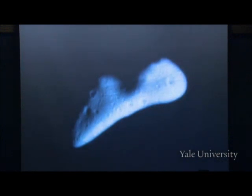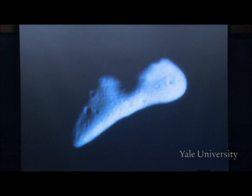Out beyond Mars is the asteroid belt, filled with rocky chunks of stuff — many, many of them. There are asteroids all over the Solar System, but most are between the orbits of Mars and Jupiter, though there are other families elsewhere. Some of these other families may have come from the asteroid belt after collisions or other catastrophes bumped them into different orbits.